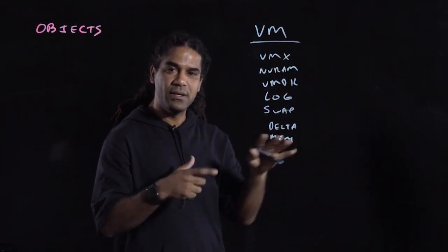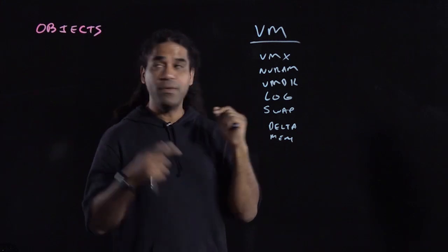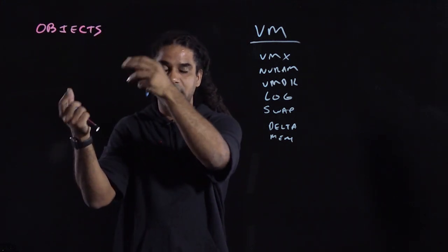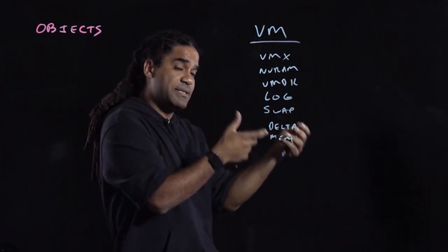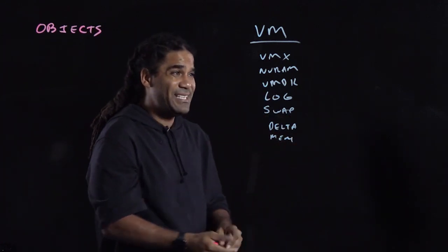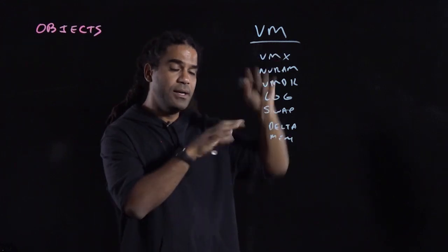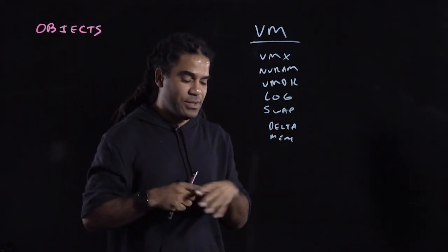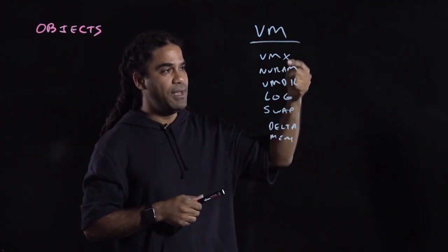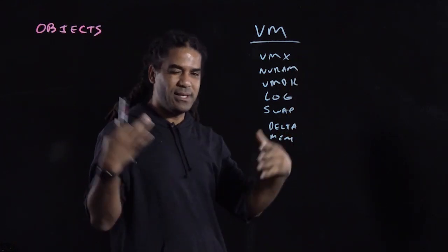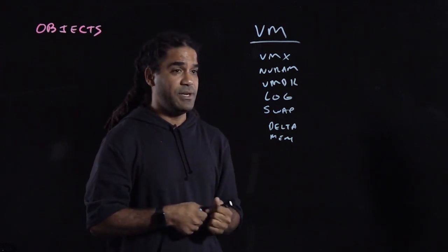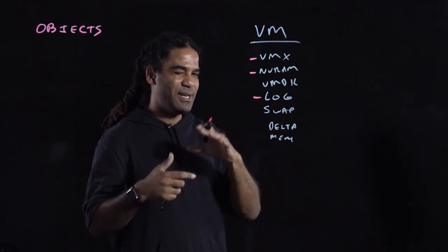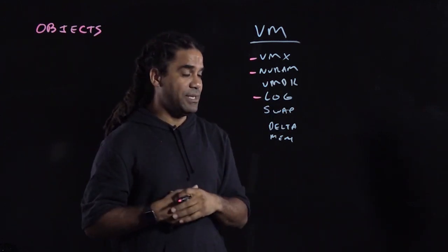How does vSAN translate these files into objects, which are then placed in your vSAN datastore down to the disk groups? It's not too hard to understand. The way I like to think about it — although it's not 100% accurate — is to ask yourself: how big are these files? Are they big files or small files? For example, your VMX file, your NVRAM file, your log file — those are kind of small files. We'll get back to those in a second.